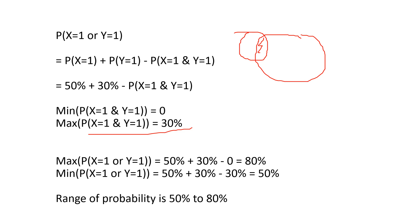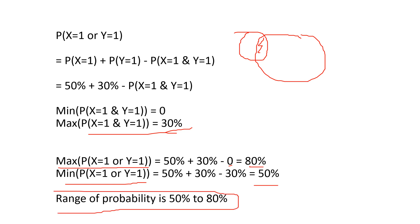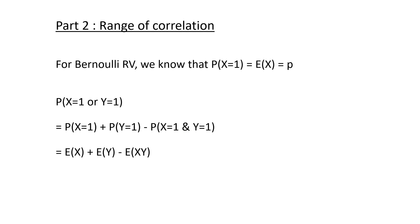Substituting these values: the maximum probability that X=1 or Y=1 is 50% + 30% minus 0 (minimum joint probability) = 80%. The minimum probability is when the joint probability equals 30%, giving 50% + 30% - 30% = 50%. So the range of probability that at least one bond defaults is 50% to 80%.